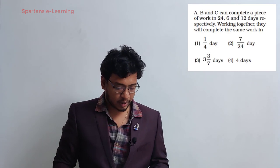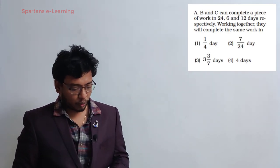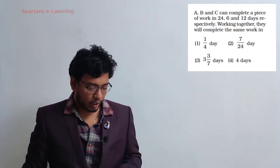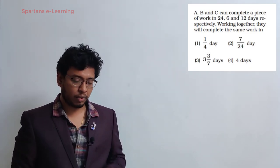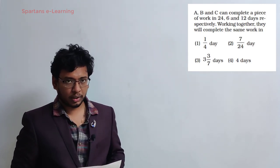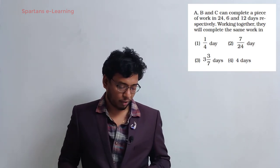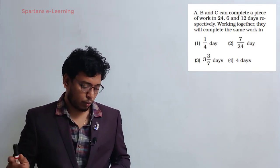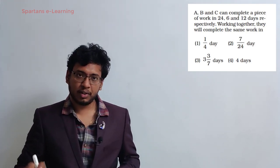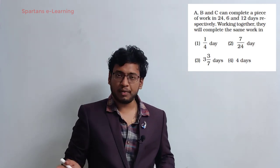Question 2: A, B, C can complete a piece of work in 24, 6, and 12 days respectively. Working together, in how many days can they complete the work? Take LCM as 24. Efficiencies: A = 24÷24 = 1, B = 24÷6 = 4, C = 24÷12 = 2. Combined efficiency = 1 + 4 + 2 = 7. Answer = 24÷7 = 3 and 3/7 days.